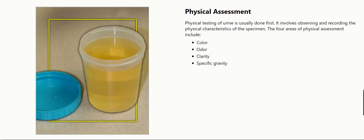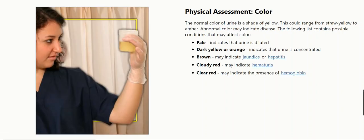Physical testing of urine is usually done first. It involves observing and recording the physical characteristics of the specimen. The four areas of physical assessment include color, odor, clarity, and specific gravity.